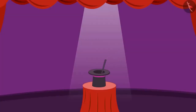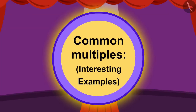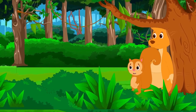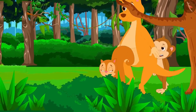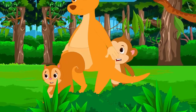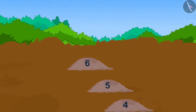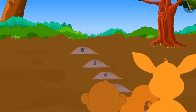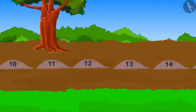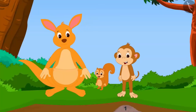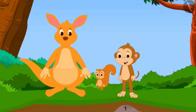In this video, we will learn more about common multiples by some interesting examples. One day, Babban Monkey, Kittu Kangaroo and Chanda Squirrel were roaming the forest. While wandering, they got lost in the forest. After searching a lot, they found a way to get out. But to reach there, they had to cross the marsh. There are 24 stones in the marsh.